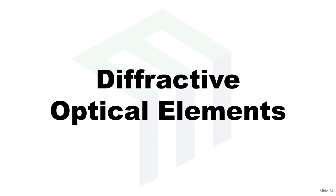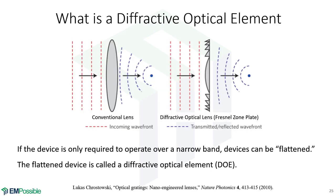Finally, diffractive optical elements: we have a lens that can form images and do other things. One thing we can do is flatten this lens into a diffraction grating — it will also diffract, and we'd like it to operate as a lens. Understanding diffraction gratings helps you design diffractive optical elements like this. There are positive lenses, negative lenses, and other elements that we can flatten in the sense of a diffractive optical element.